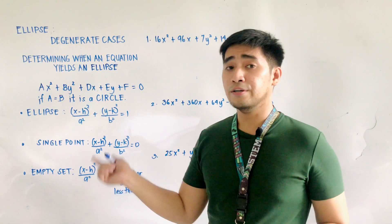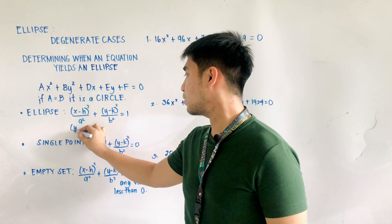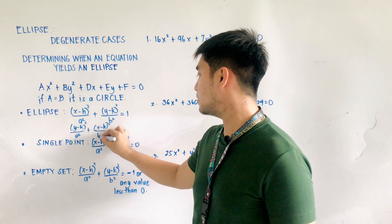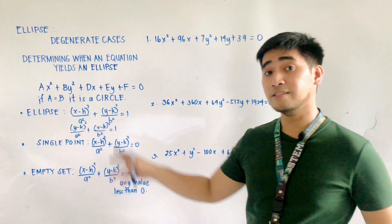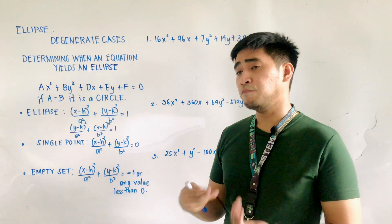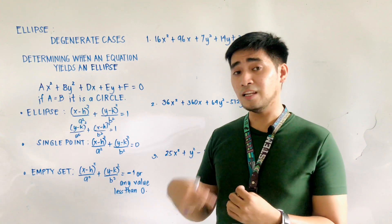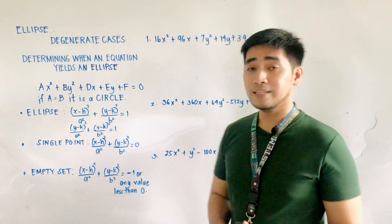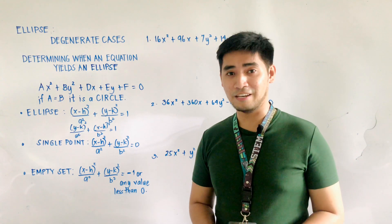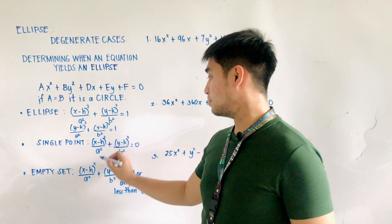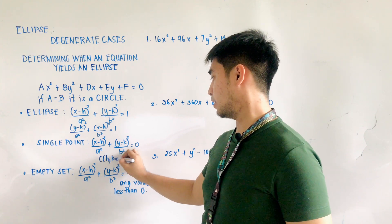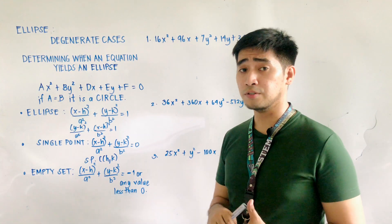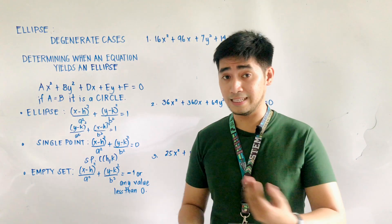For the major axis vertical, this becomes (y − k)²/a² + (x − h)²/b² = 1. To know whether an equation yields an ellipse, we need to convert it into standard form. For the single point, just like the circle, the right side of the equation is equal to zero, and the point is the center (h, k). It takes the form (x − h)²/a² + (y − k)²/b² = 0.